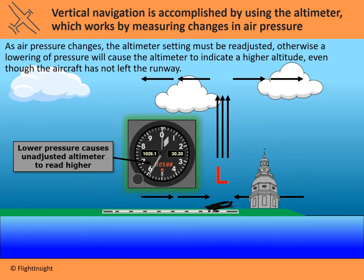If we step out of the aircraft and leave it alone for a week and come back without adjusting the altimeter, the pressure may have changed. We've gone from high pressure to low pressure over Annapolis. The altimeter will still be comparing the current pressure to the sea level pressure we set a week ago — still 30.30. Because the pressure has dropped, it will seem like the aircraft has climbed in altitude. Rather than reading the field elevation of 34 feet, it will erroneously read your altitude as 588 feet in this example with lower pressure.